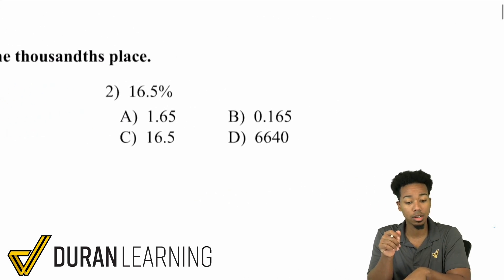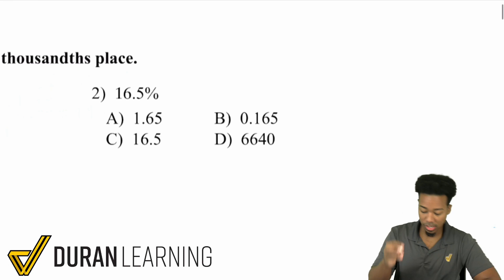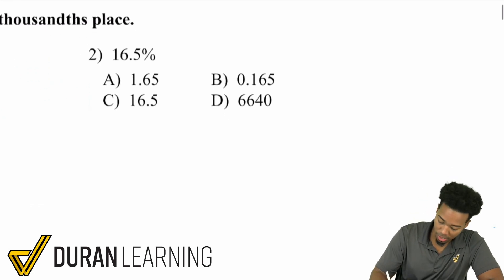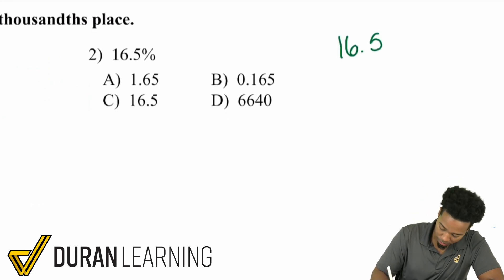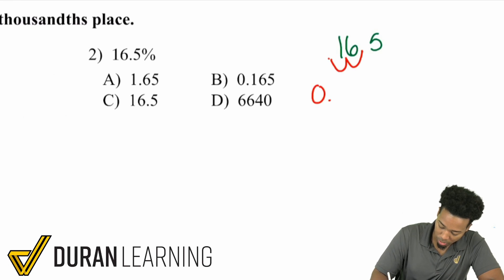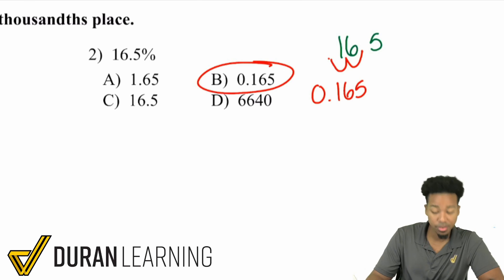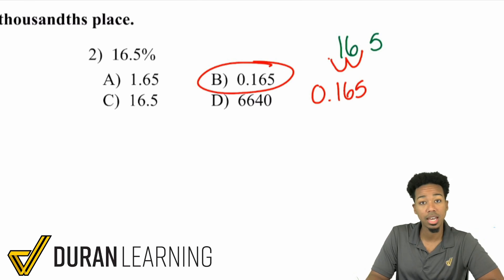So looking at number two: 16.5%. We write out 16.5, and then we move that decimal to the left one, two times — and we get 0.165. Just like that.